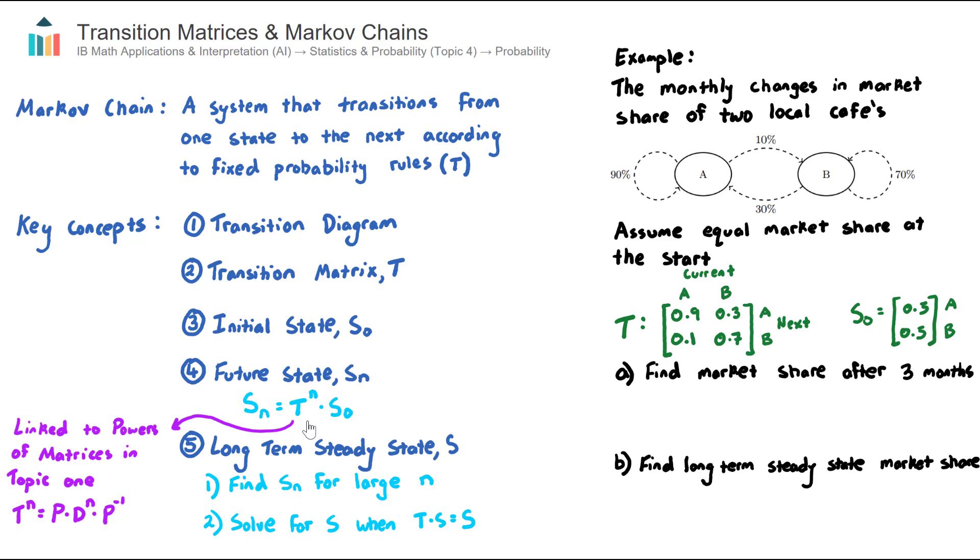This is a very useful concept here and regularly asked in these types of exam questions. Some sort of future state Sn. So this question asks to find the market share after three months. So we need to find S3. And this formula here is given to you in the formula booklet. So Sn is equal to the transition matrix raised to the power of that n multiplied by the initial state. Therefore, we can find the state after three months by calculating S3, and that will be equal to the transition matrix raised to the power of three, multiplied by the initial state matrix.